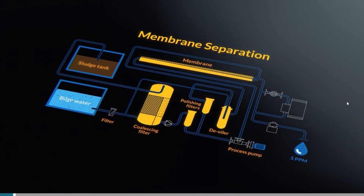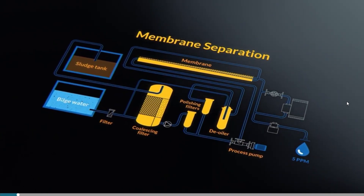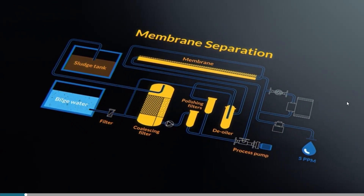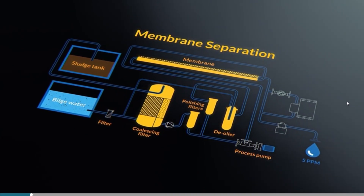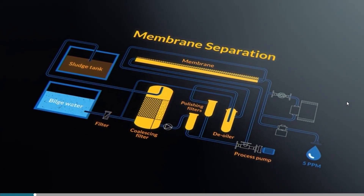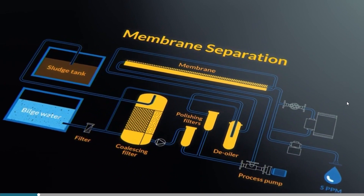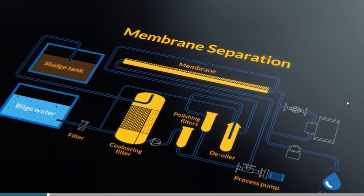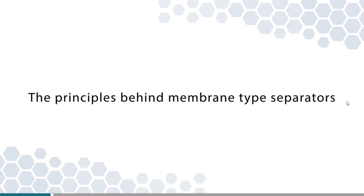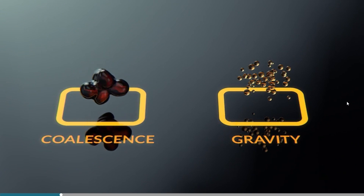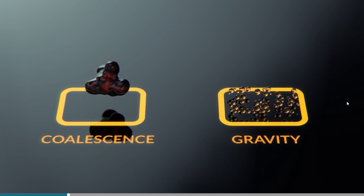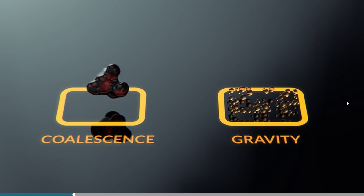In this chapter, we will take a look at membrane type separators. These are a natural development from earlier separators, which used some of the basic principles we have already described. The membrane itself was introduced as a final stage to improve oil separation. The main principles at work in membrane separators are gravity and coalescing, in addition to the membrane itself, which acts like a filter.